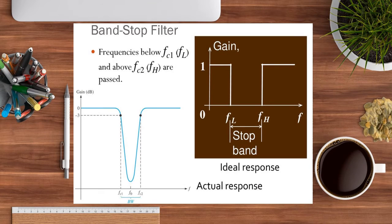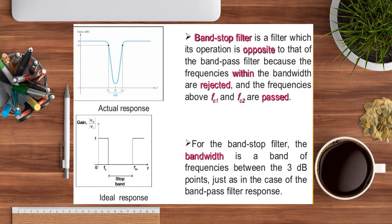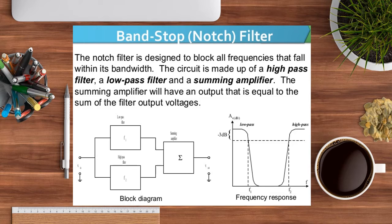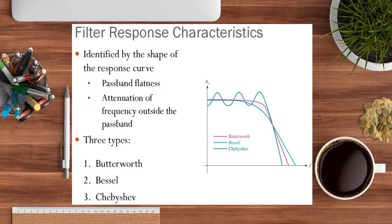The band stop filter stops a particular range of frequency — from a lower to a higher value — and passes the rest. It is the vice versa of the band pass filter, similar to how the low pass differs from the high pass. Parameters such as initial and final frequency ranges, bandwidth, and quality factor can all be found for the band stop filter using a summing amplifier configuration.